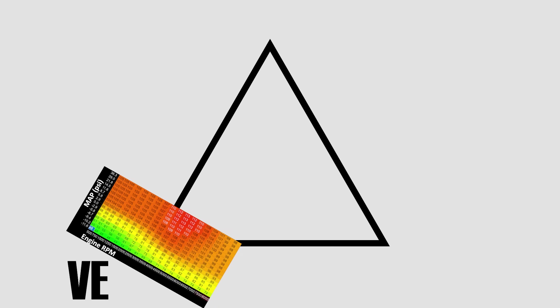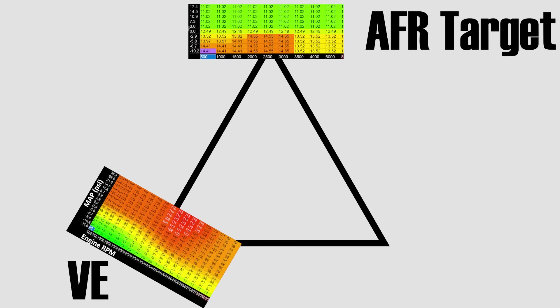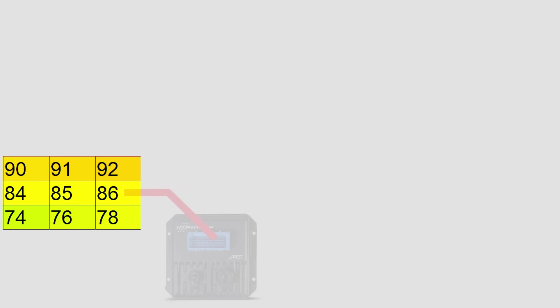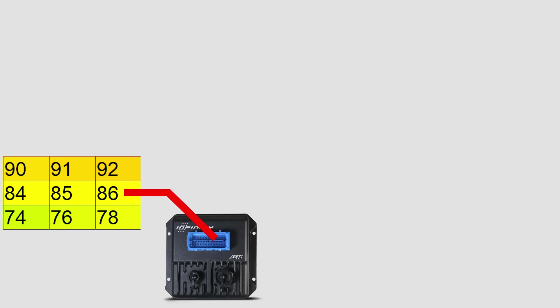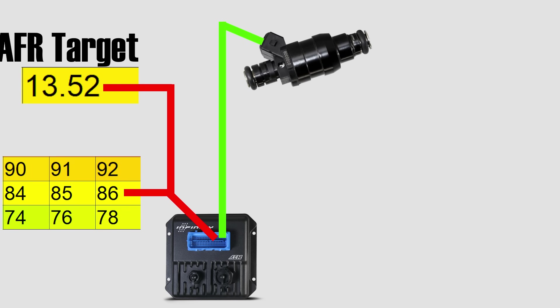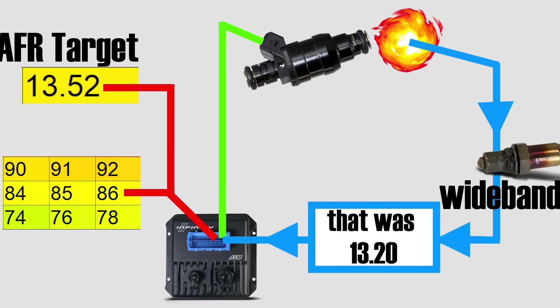So the triangle of VE map, air fuel ratio target map and wideband sensor works like this. The ECU reads the VE map and then it injects fuel according to the values in the air fuel ratio target map. The wideband sensor then tells the ECU that it's off by a certain percentage. The ECU corrects the amount of fuel injected until the air fuel ratio reported by the wideband sensor equals the target air fuel ratio.